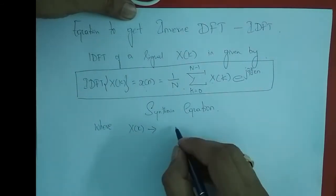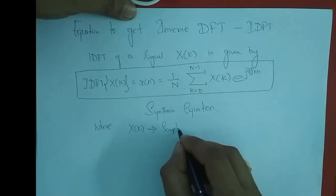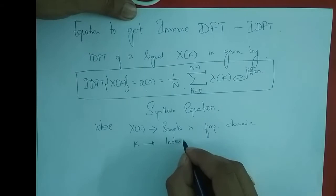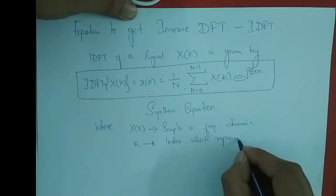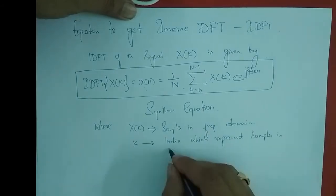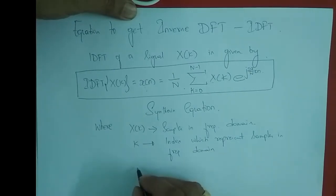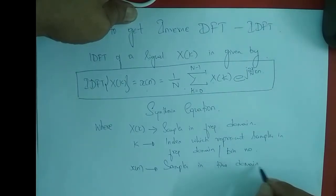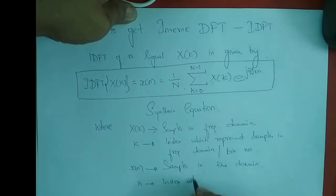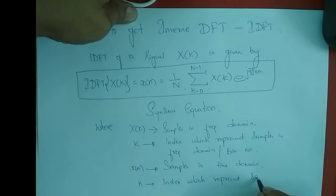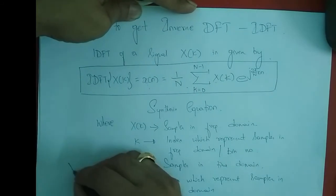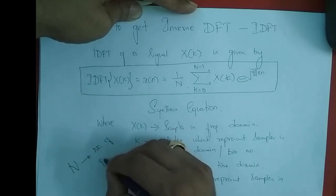In the IDFT equation: X of k represents the samples in the frequency domain; k is the index which represents the samples in the frequency domain, also called the bin number; x of n is the samples in the time domain; n is the index which represents the samples in the time domain; and capital N is the number of points or number of samples.